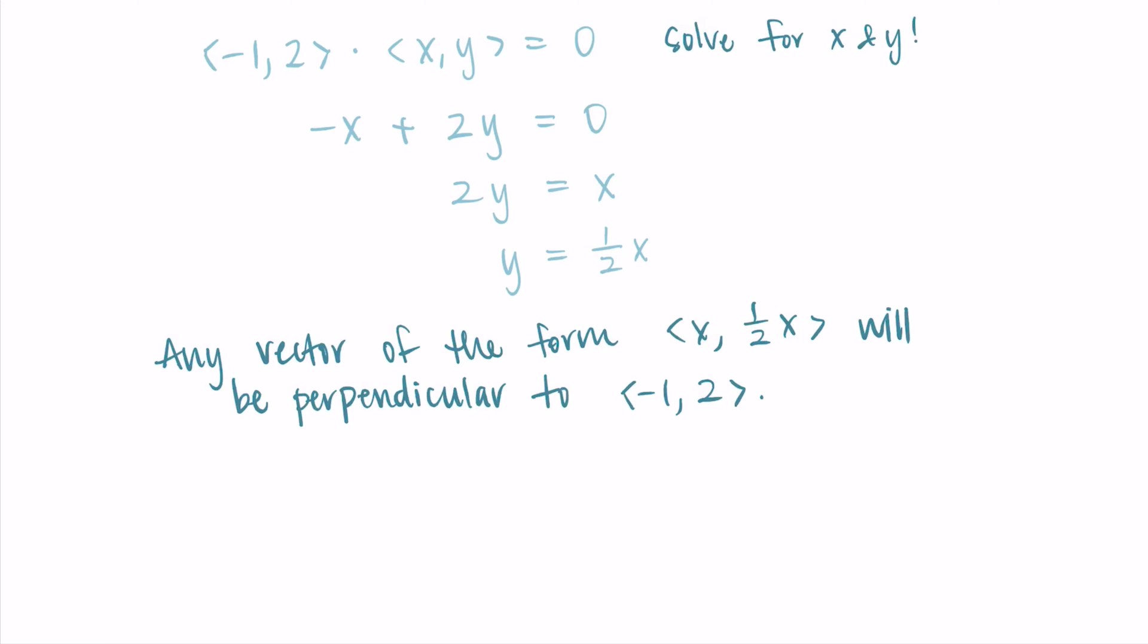So this has tons of solutions to it. So we could think of 1 for x, that would mean 1 half was y. We could do 10 for x, that would mean 5 was y. We could do a negative value for x, negative 2 for x, meaning negative 1 is y, etc. So there are lots of options for vectors that will be perpendicular to the one we're looking at. We just needed to pick 1.